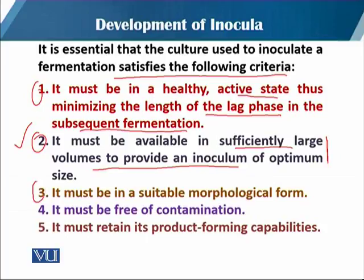The third criterion is that the inoculum must be in a suitable morphological form. Sometimes a spore inoculum is required, so we should produce the spores first. If we need the vegetative form, we have to develop that morphological form and use the vegetative cells at the appropriate stage. So the morphological form is very critical.